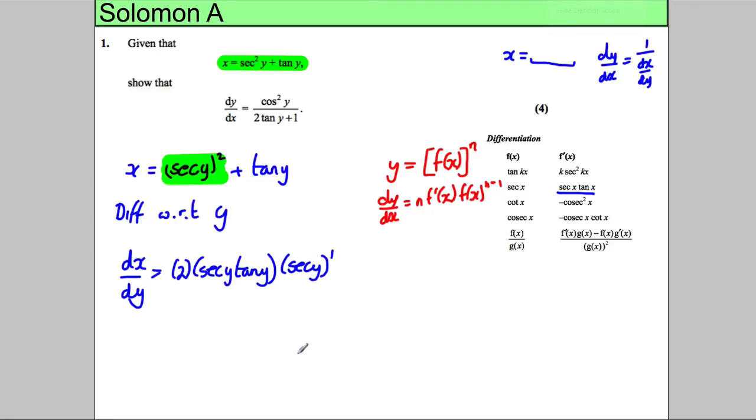Then we differentiate tan y. The differential of tan x is sec squared x, so we're going to have plus sec squared y in this case. So this is going to equal two sec squared y tan y plus sec squared y.